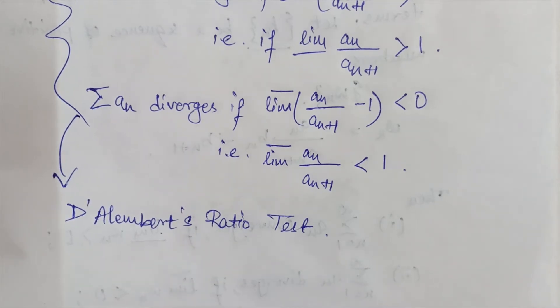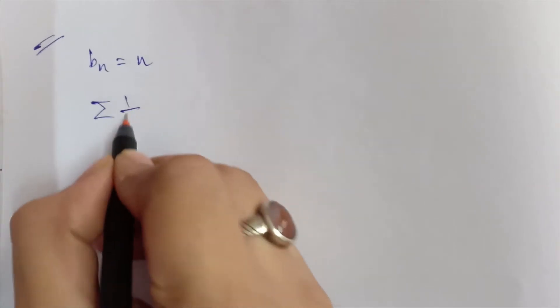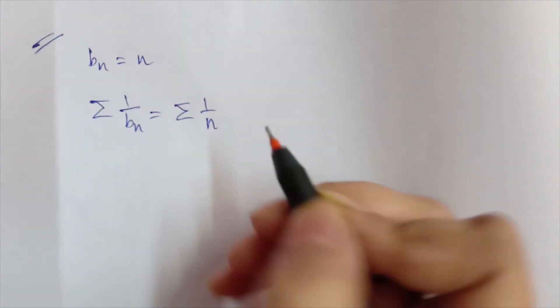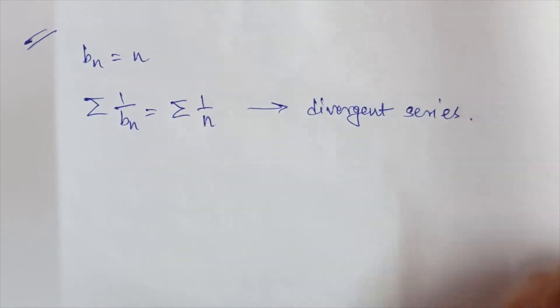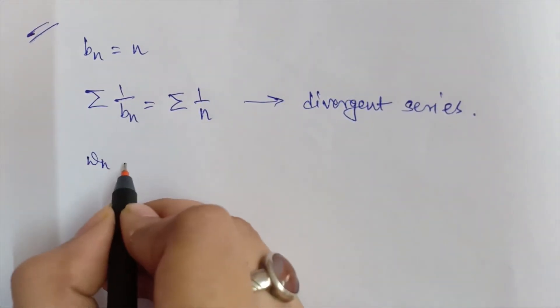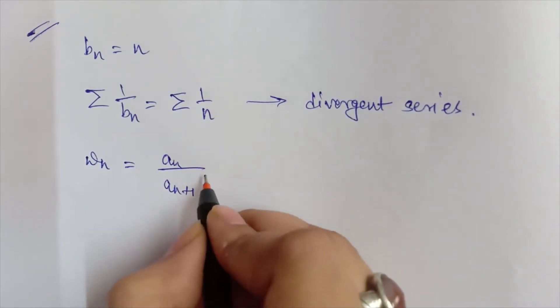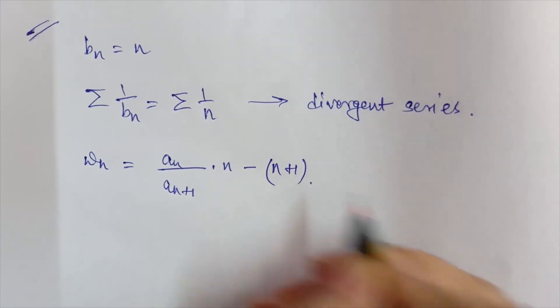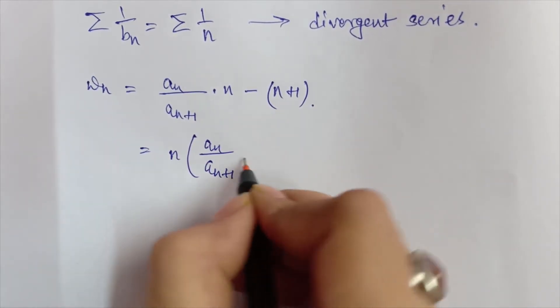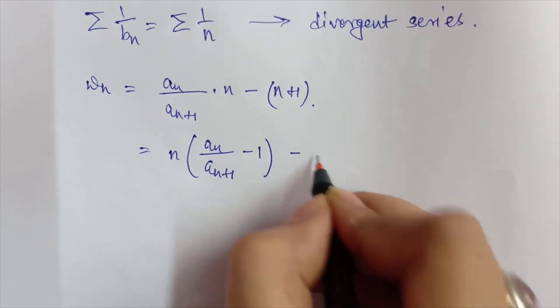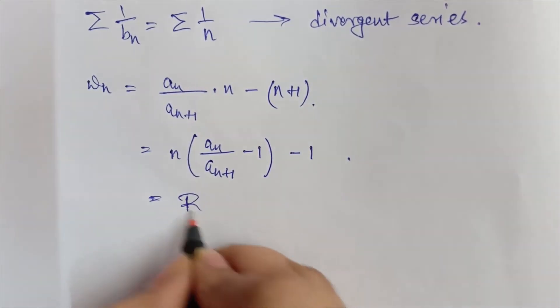In fact, Raabe's test is also a particular case of Kummer's test. For Raabe's test, we take b_n = n, so that the series 1/b_n equals the series 1/n, which is a divergent series. From here, W_n becomes (a_n / a_{n+1}) * n minus (n+1), which can be written as n * (a_n / a_{n+1}) - 1 - 1.